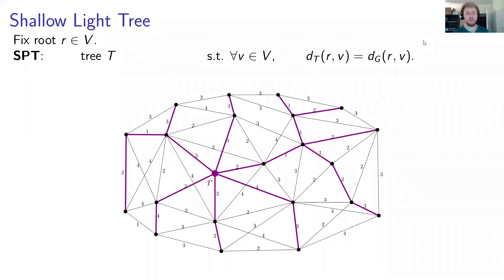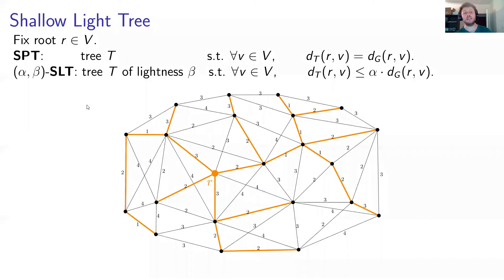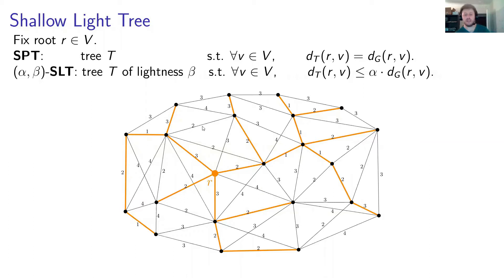Next, we study shallow light trees, or SLT. Given a root vertex r, a shortest path tree SPT is a tree such that for every vertex V, the distance between r and V in the tree equals the distance in the original graph. An SLT is a compromise between MST and SPT — we want both approximate distances to the root and to be light. Formally, we say a tree is an (alpha, beta)-SLT if it has lightness at most beta, and for every vertex V, the distance from root r to V is at most alpha times the original distance.